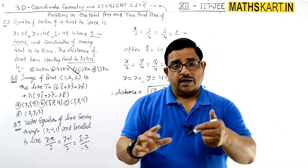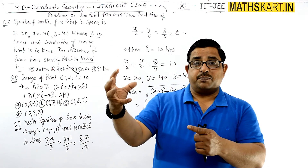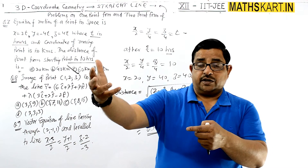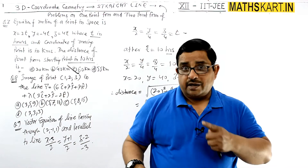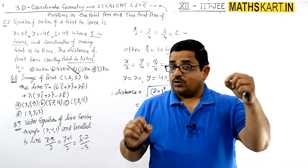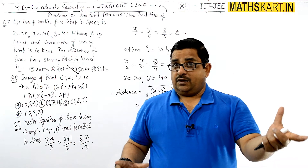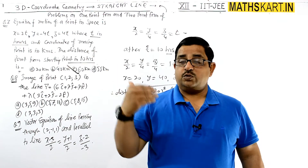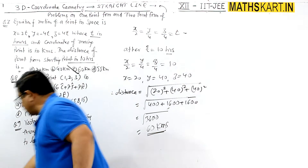So this was the line equation for the moving point. After 10 hours, each coordinate travels a certain distance. With respect to the origin, applying the straightforward distance formula gives us how far the point is from origin. That completes question 7; next question is coming.